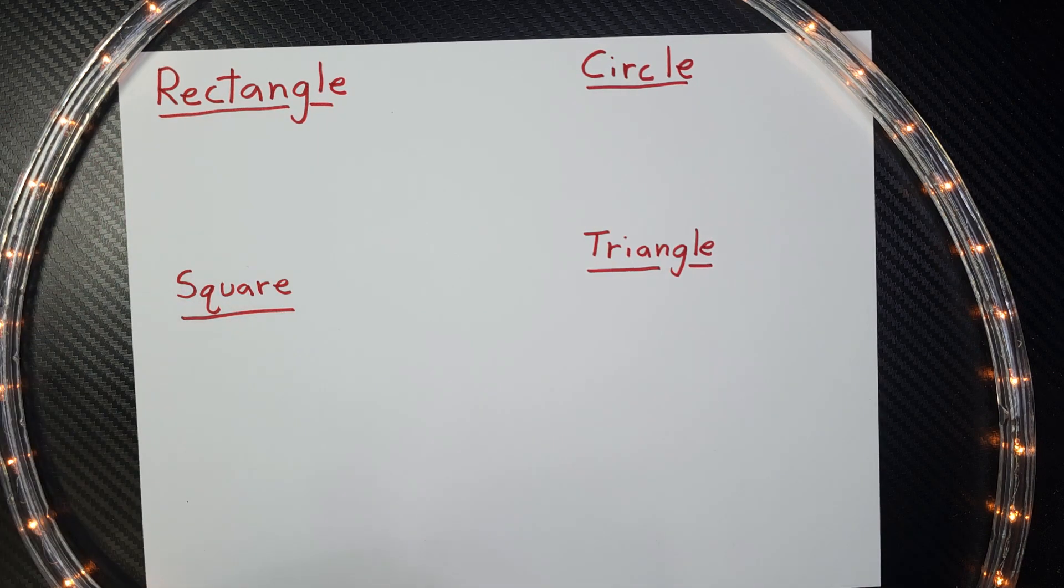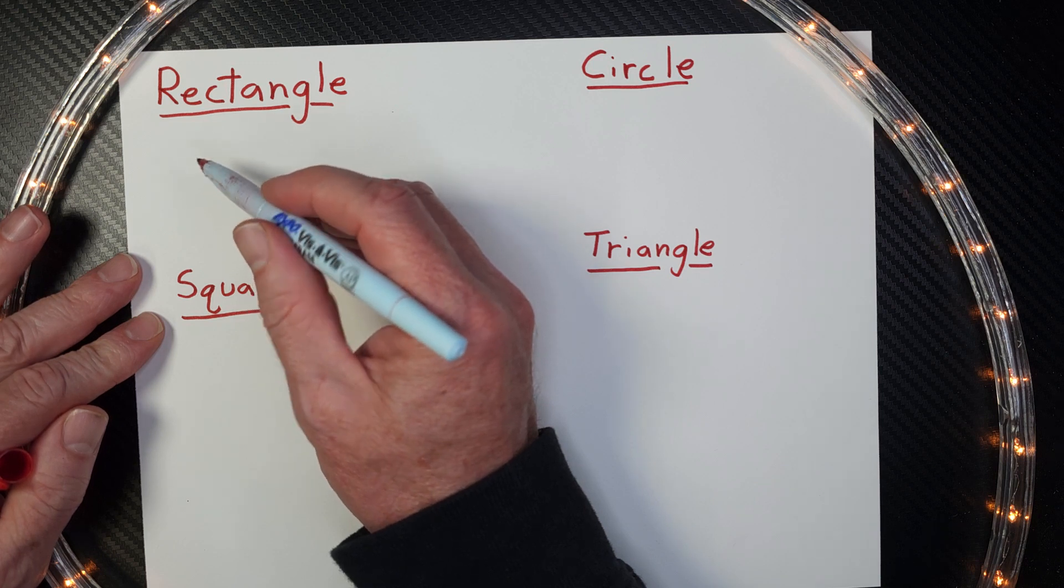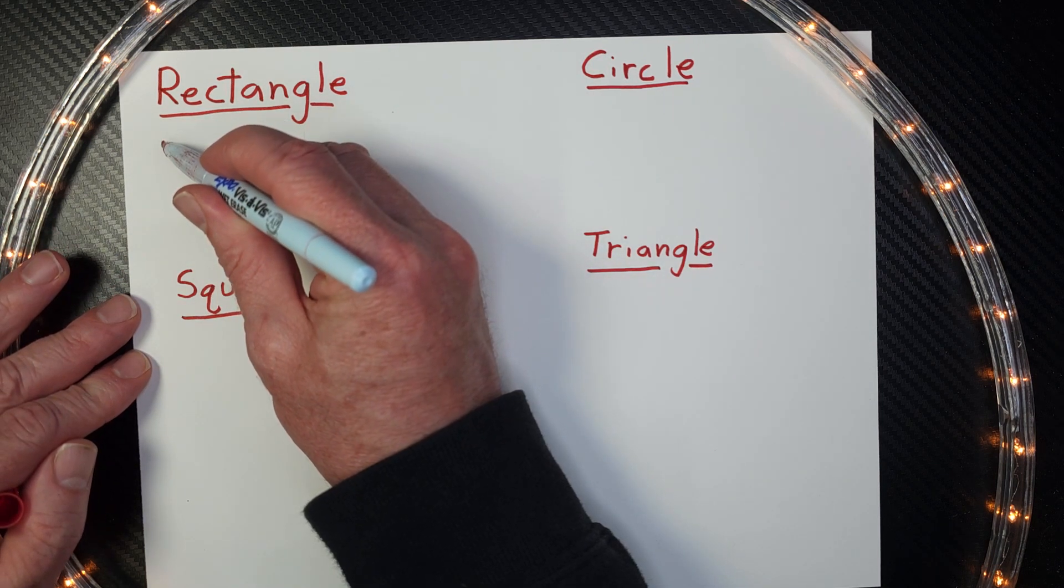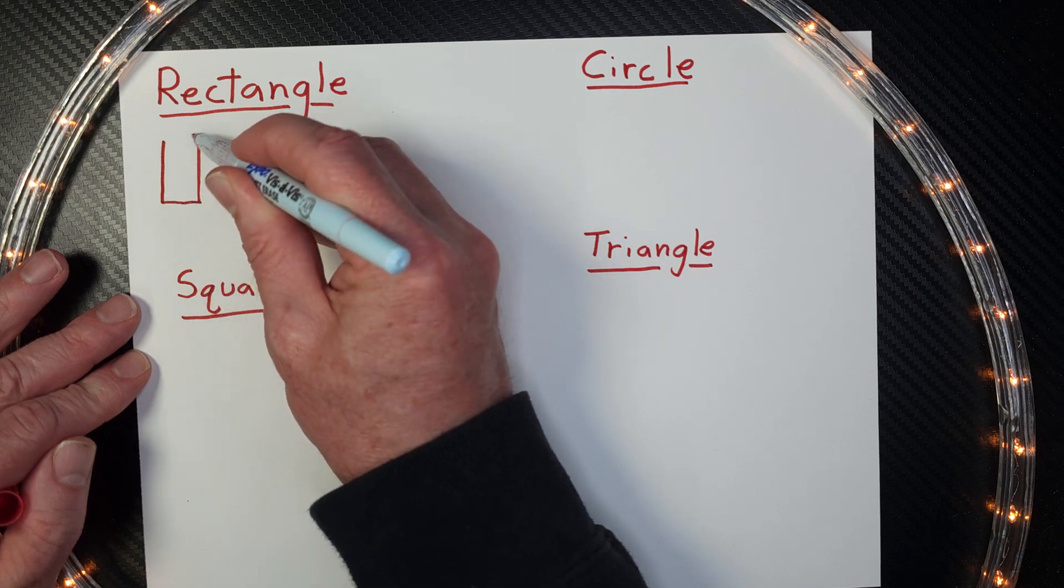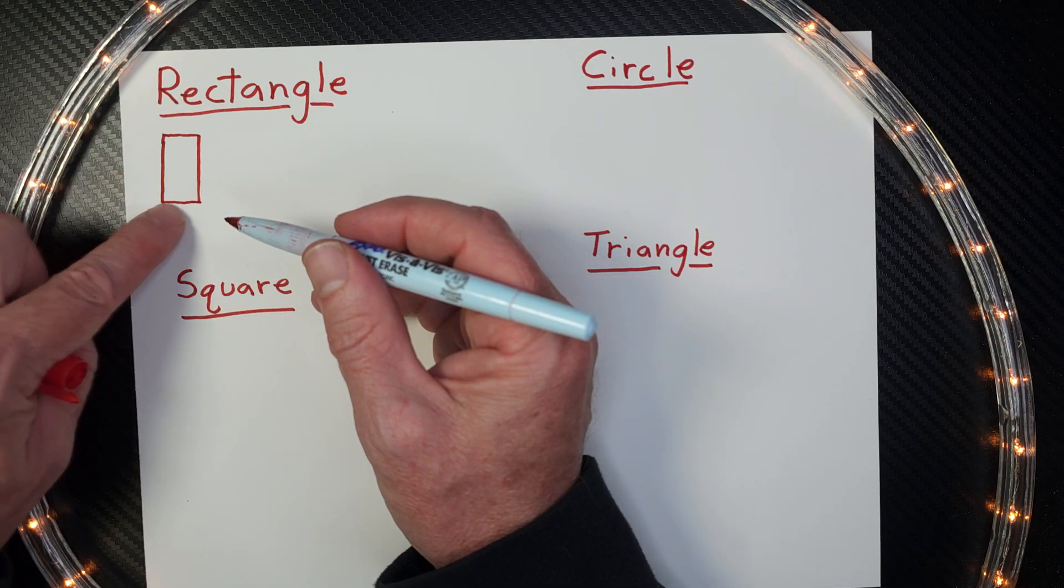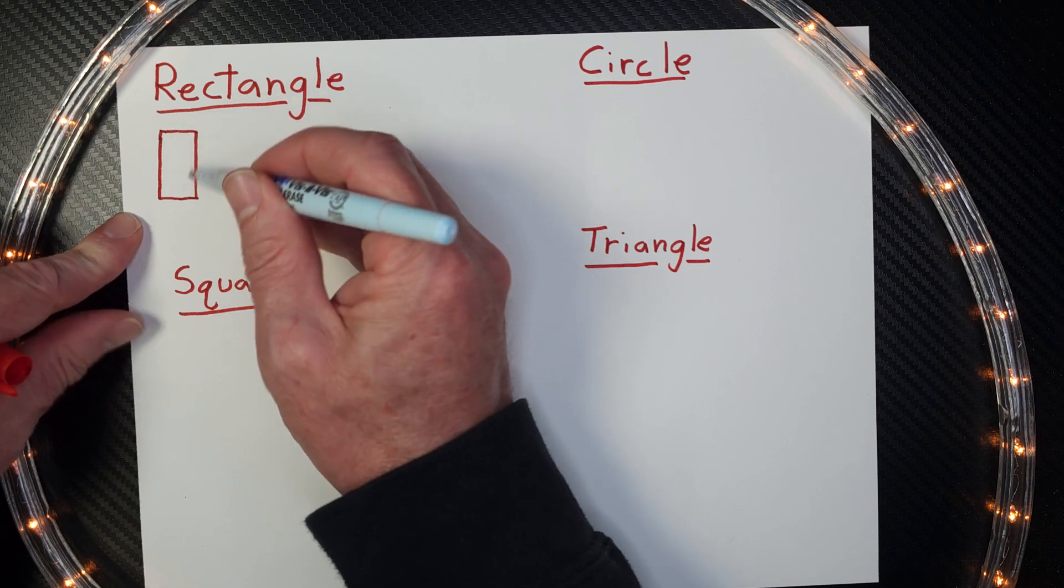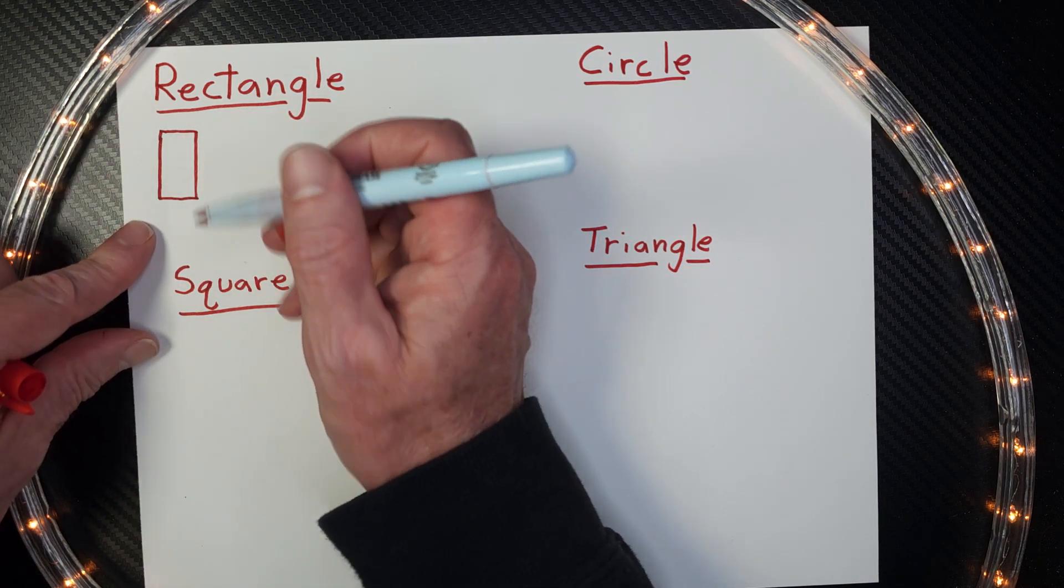First, we're going to draw a rectangle. A rectangle has four sides, and two of the sides are longer than the other one. So I'm going to go ahead and show you. Look at that. This is a rectangle. You'll notice that these sides here are longer than these sides right here. We have one, two, three, four. That is a rectangle with four sides.